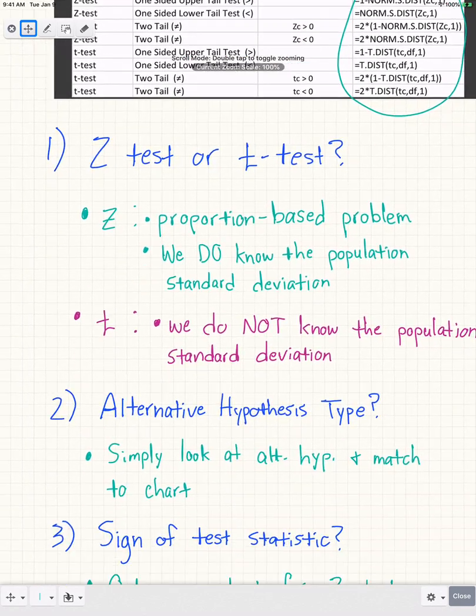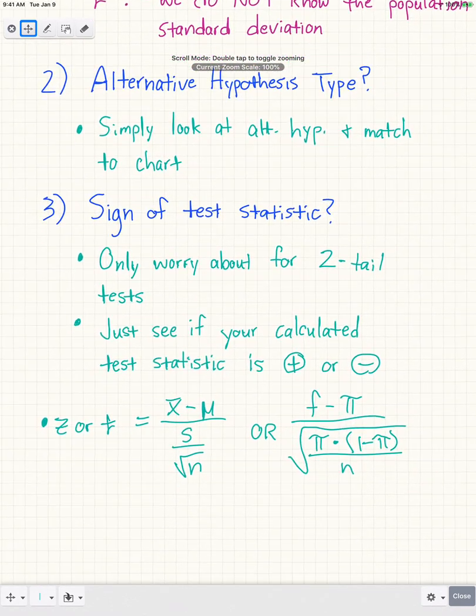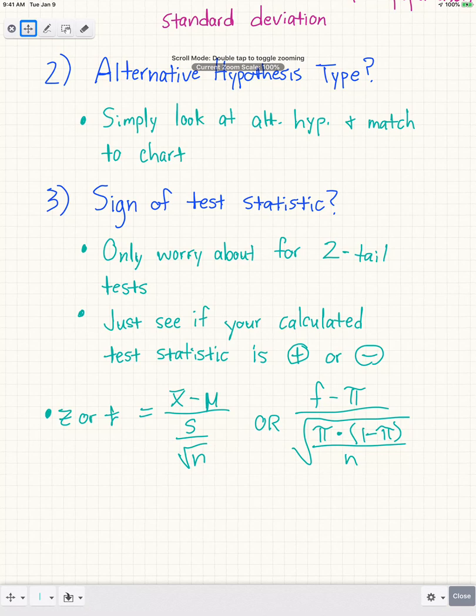The sign of the test statistic only matters for two-tailed tests. We determine this by looking at the test statistic we calculated and deciding whether it's positive or negative.